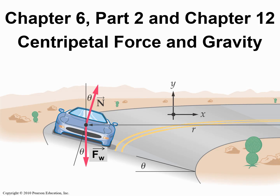This is Chapter 6, Part 2, and Chapter 12: Centripetal Force and Gravity. We're going to learn about the forces that cause objects to move in circular paths. One of those objects would be a planet. Although a planet's orbit is not perfectly circular — it's more elliptical — satellites have orbits that are more circular. We're going to learn how gravity causes those orbits, and we'll also learn what gravity is.